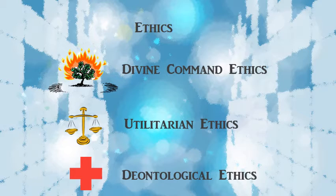Deontological ethics is about duty — our duty to treat each other well and not use each other solely as means to another end. Even if sacrificing one would save more people, we don't kill people involuntarily regardless of the outcome. Utilitarianism is about the greatest good for the greatest number; if consequences pay off, it's okay to break a few eggs. Divine command ethics is simply whatever God says. Those are the three ethical systems.